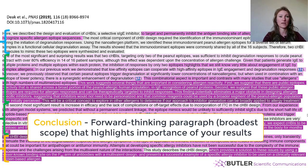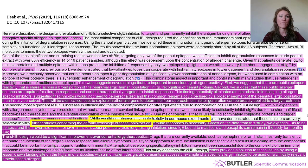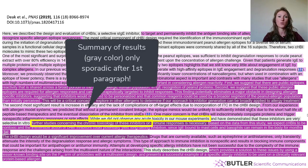The next thing to notice is that other than the first paragraph of the discussion, there is very little summary of results. Your reader already read the results section — they don't need you to summarize everything for them. After the beginning of the discussion where you summarize the key points and relate them to the gap in the field, you should only use summary of results in very specific locations to remind the reader of something they need to know before you move on to discuss it. For example, they use only half a sentence saying they did not observe any acute toxicity in their mouse experiments, and then move on to talk about future studies.